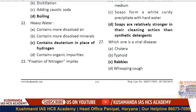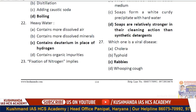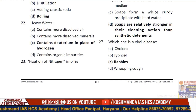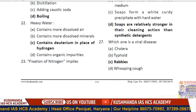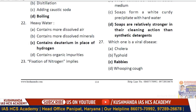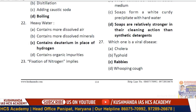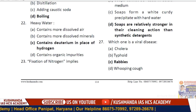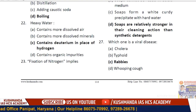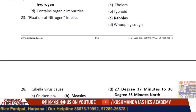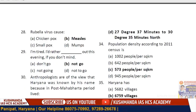Question 27: Which one is a viral disease? The answer is rabies. Rabies is caused by a virus and is transmitted through a dog bite. Rubella virus causes measles.